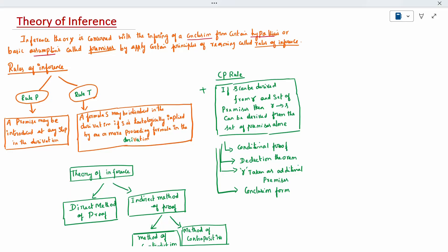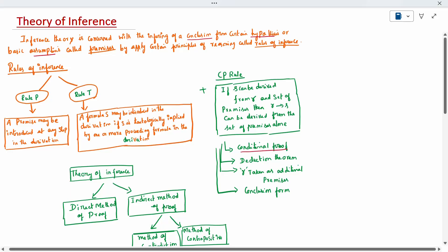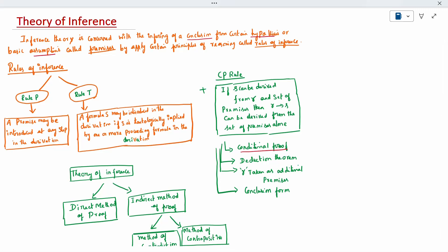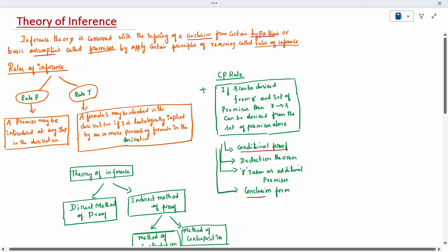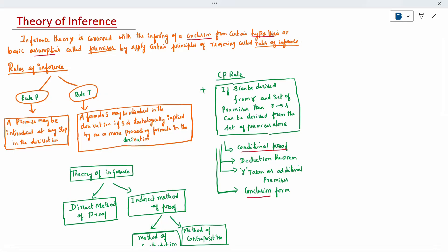The CP rule is nothing but conditional proof — in short form it is written as CP rule. For the CP rule, we have a theorem called the deduction theorem. The CP rule is used in the conclusion part. If S is derived from R and a set of premises, then R conditional to S can be derived from the set of premises alone.